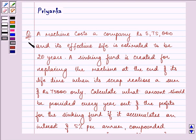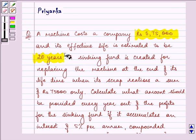Hello and how are you all today? The question says a machine cost a company Rs. 5,75,000 and its effective life is estimated to be 20 years.